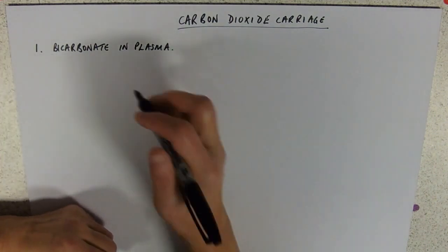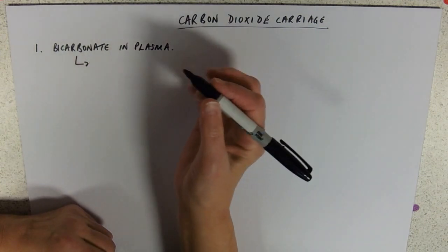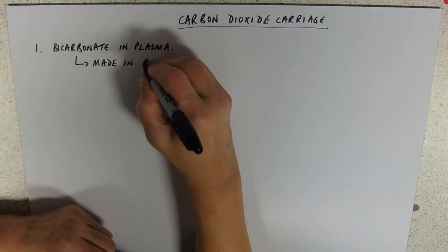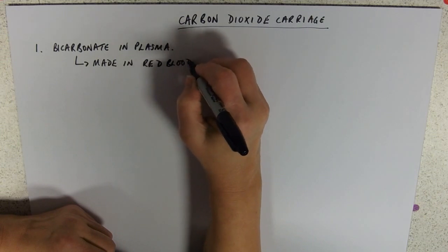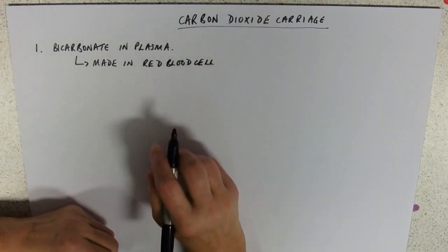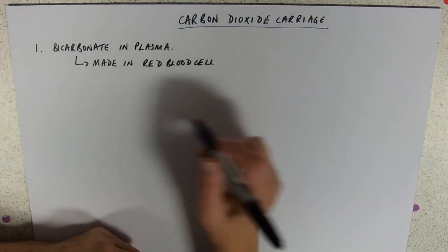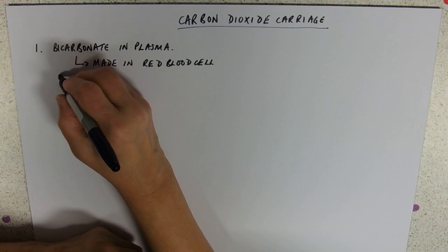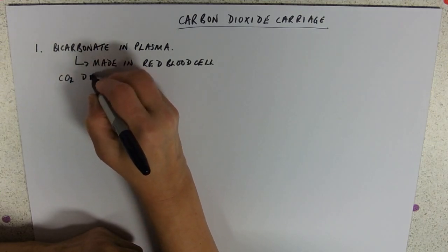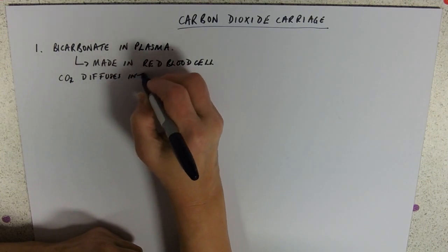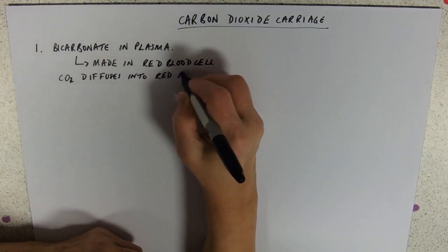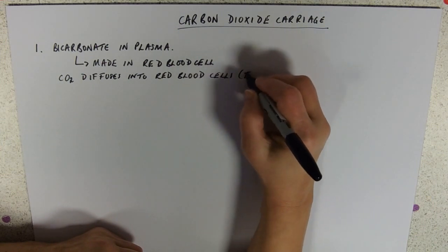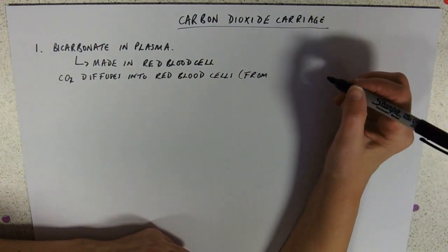So where it is made is in a red blood cell. So red blood cells have a role in carriage of carbon dioxide. So to get carbon dioxide into the form of bicarbonate we're going to learn a little sequence of reactions. So the carbon dioxide first of all diffuses into the red blood cell. Now obviously this is at the tissues. So these are where respiration is happening and respiration of course produces carbon dioxide.